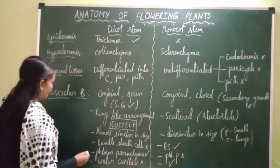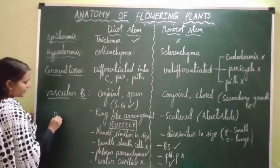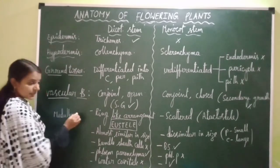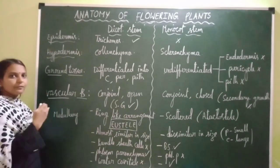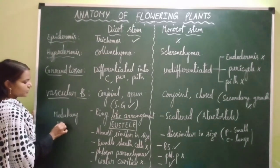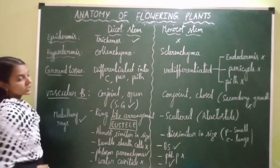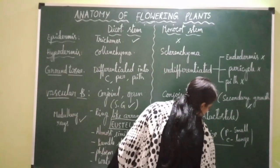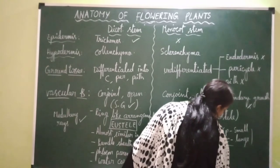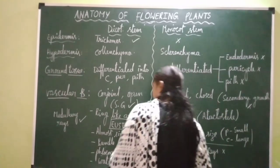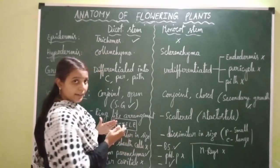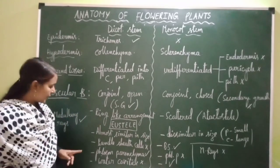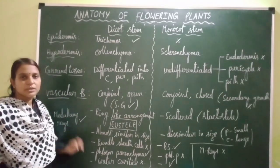Medullary rays are the parenchymatous tissues present in the form of rays in between the vascular bundles. Medullary rays are present in dicot stem but absent in monocot stem.